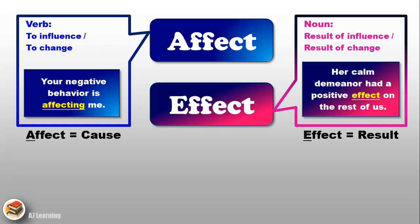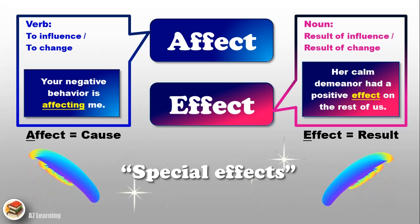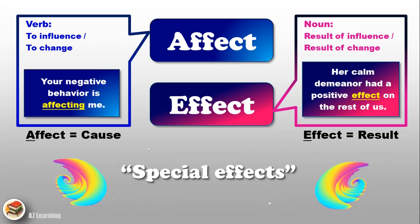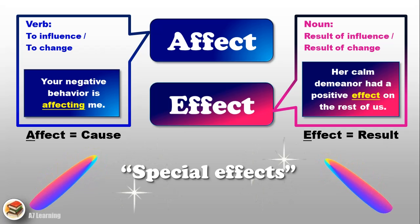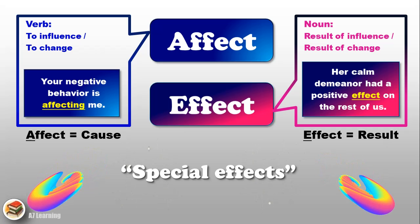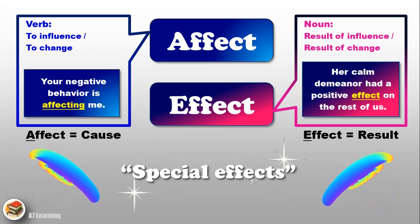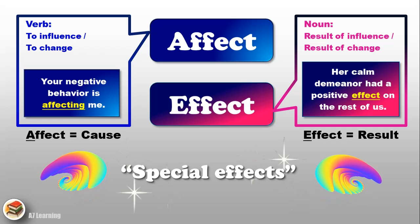Whenever I'm trying to distinguish between these two and I get confused, I think about the term 'special effects.' Special effects uses the E-fect form of this word, so it has the E in it. And special effects are things, so that usually sets me straight. Because one is a thing, another one is an action — one is a noun, one is a verb.